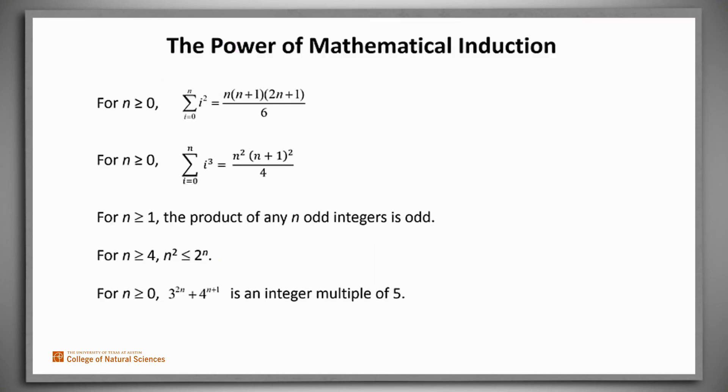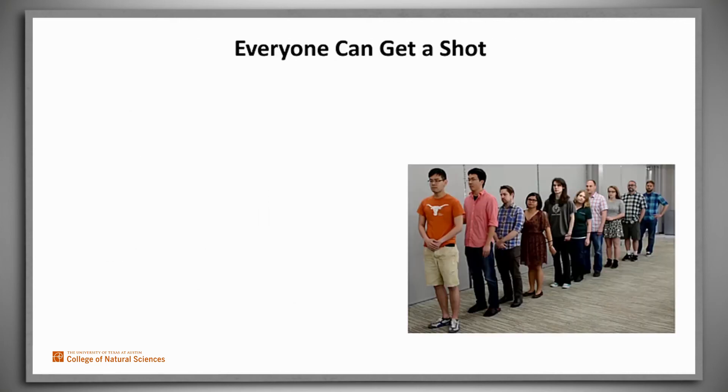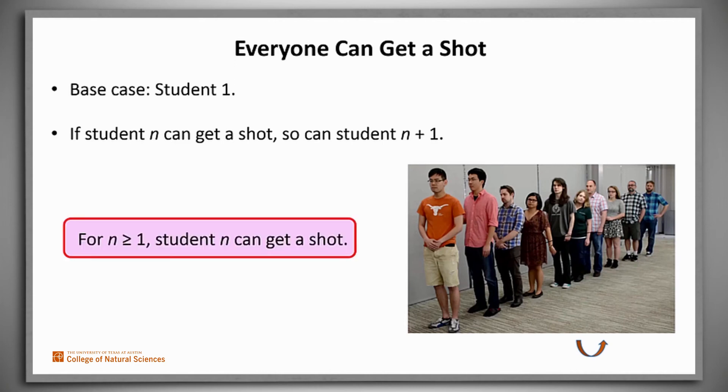Mathematical induction is a powerful tool for proving claims about the natural numbers. Here's just a short list of theorems we can use it to prove. But what about the students who want flu shots? Students aren't natural numbers. Ah, but their positions in line are. So in fact, we can use mathematical induction to prove that everyone will stay healthy. We first show that student 1 can get a shot. Then we show that if student n can get a shot, so can student n plus 1. And then we can conclude that everyone in line can get a shot.